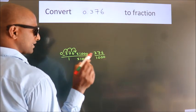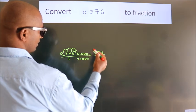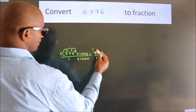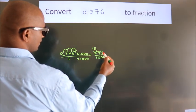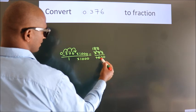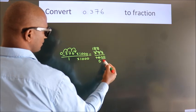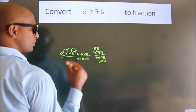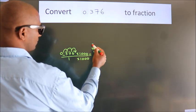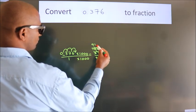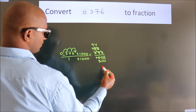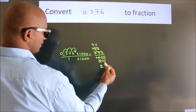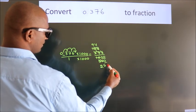Now I cancel with 2. 2 1s, 2 8s, 2 8s, 2 5s, these zeros as it is down. I cancel with 2 again. 2 9s, 2 4s, 2 2s, 2 5s, this 0 as it is down.